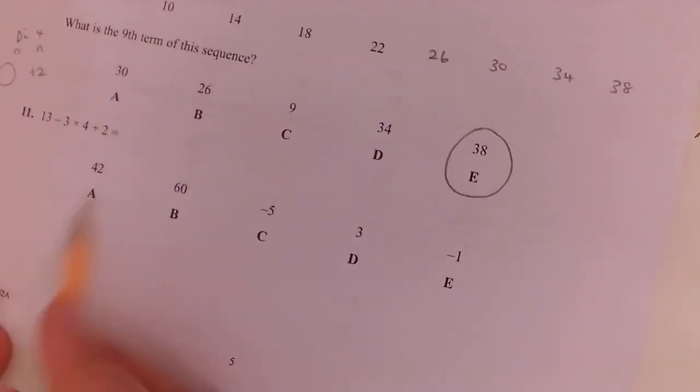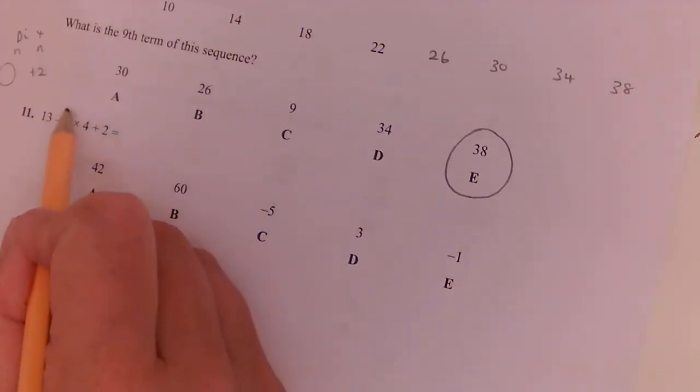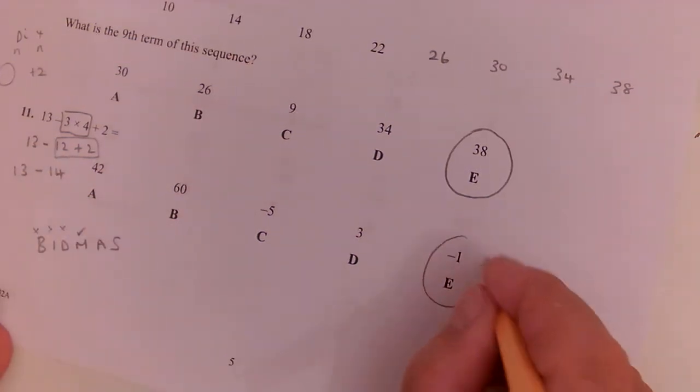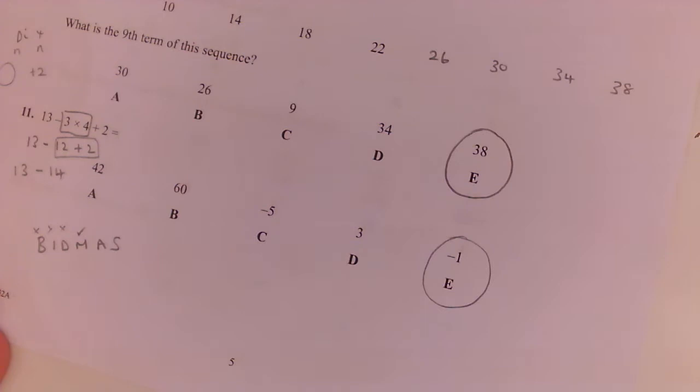Question number 11 is BODMAS, not BIDMAS. So B-I-D-M-A-S. So no brackets, no indices, no division. Do the multiplying first. So I've got 13 take away 12 plus two. Then I do the adding. 13 take away 14 is minus one. So the answer is minus one.